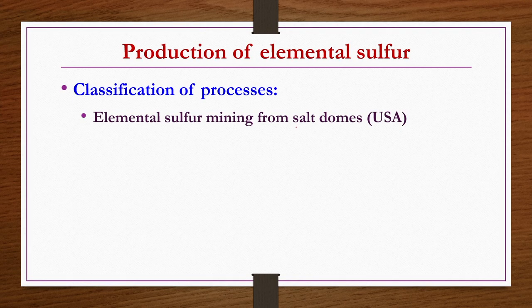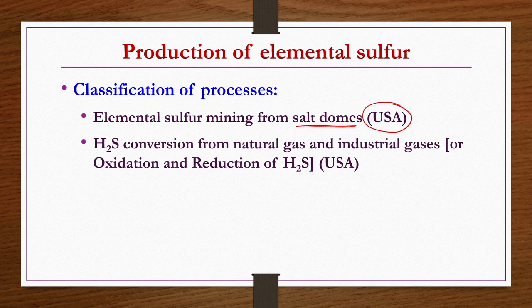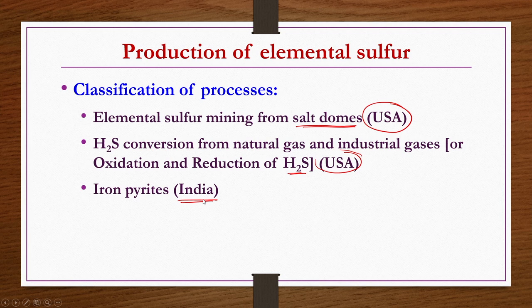There are primarily three methods for production of elemental sulfur: elemental sulfur mining from salt acid domes (famous in America, Canada, and Europe), H2S conversion from natural gas and industrial gases by oxidation and reduction of H2S (also famous in USA, Canada, and European countries), and the iron pyrites process which is very famous in India. More than 50 percent of elemental sulfur in the world is produced by the H2S conversion process.